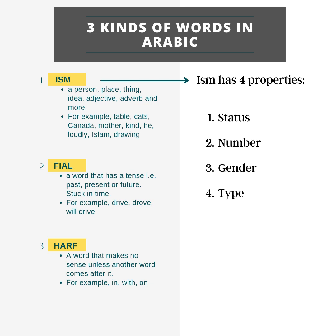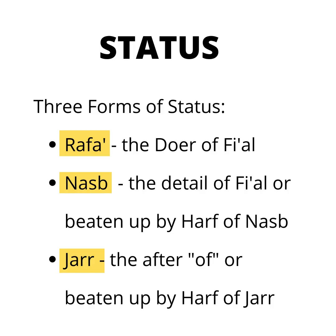There are four properties of an Ism: status, number, gender, and type. There are three forms of status: Rafa, that is the doer of Fi'al; Nasab, detail of Fi'al or an ism beaten by Harf of Nasab; and Jar, which is after Rafa or an ism that has been beaten by the Harf of Jar.